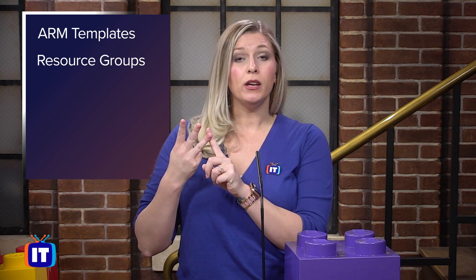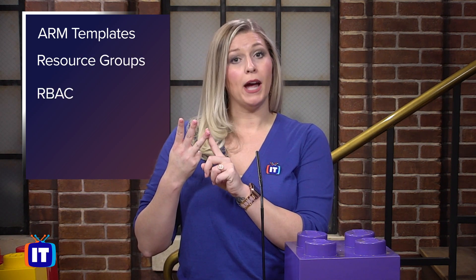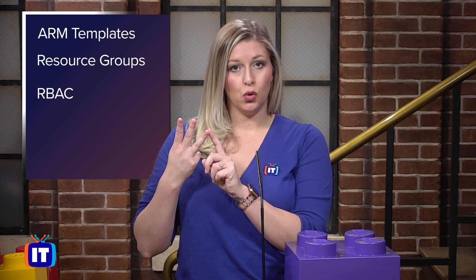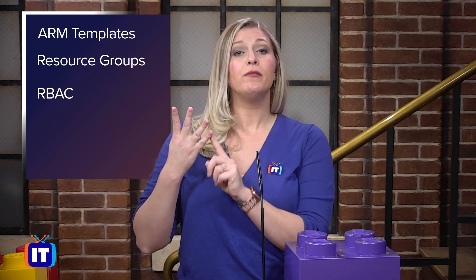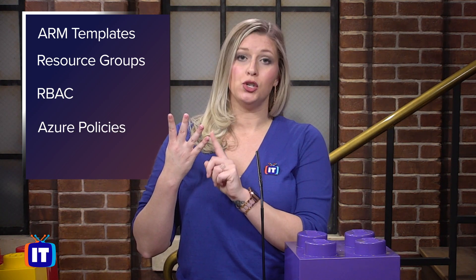You might be thinking, why do I have a Lego next to me? This is a giant Lego, but we're going to pretend that this is an ARM template. Azure Blueprints are composed of currently four different types of artifacts: one, being an Azure Resource Manager template or ARM template; two, being a resource group; three, an RBAC role-based access control assignment; and four, we can have our Azure policy.